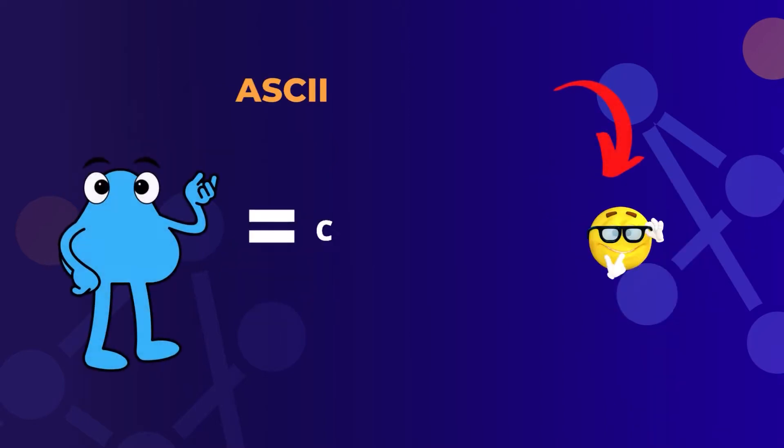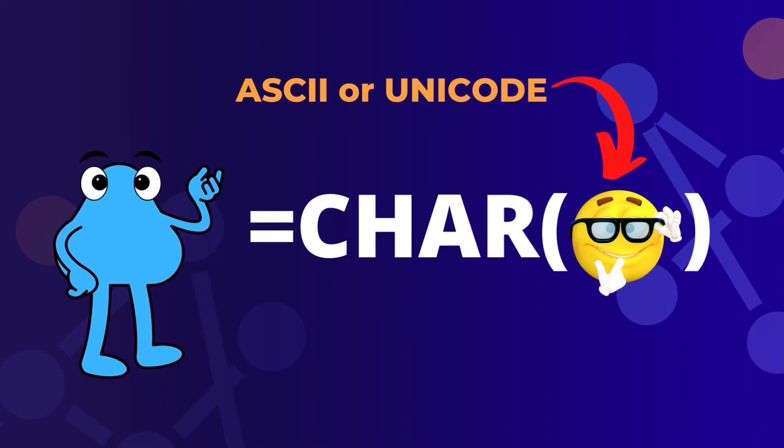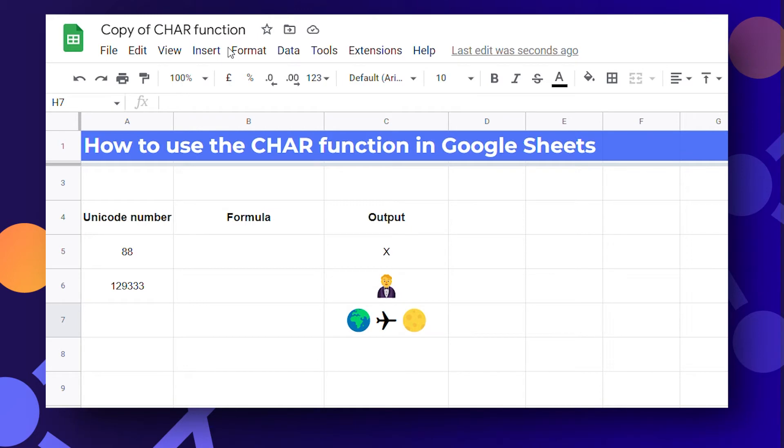The char function takes only one number as an input which is the ASCII code or the unicode number representing that character. That code you can find easily online. In this video we are going to see some of the use cases of the char function in Google Sheets.